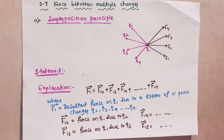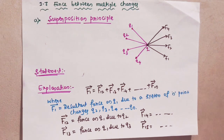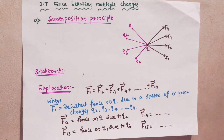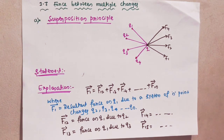Superpose means it interacts with each other. Superposition principle states that when a number of charges are interacting, here n number of charges are interacting, then the total force on a given charge is equal to the vector sum of the forces acting on it due to the remaining charges.